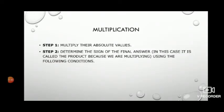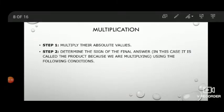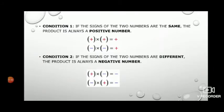Next is multiplication. When multiplying two integers, first multiply the absolute values, then determine the sign of the result. There are two conditions: if both numbers have the same sign, the result is positive; if both numbers have a different sign, the result is negative.